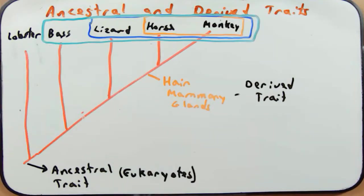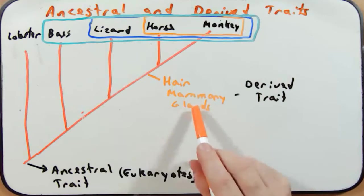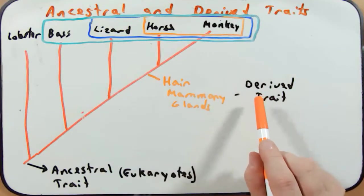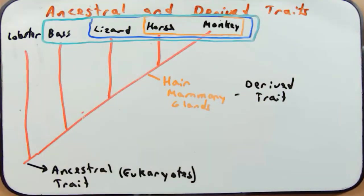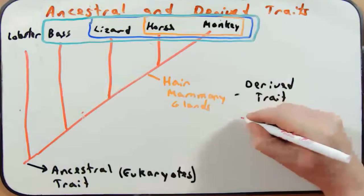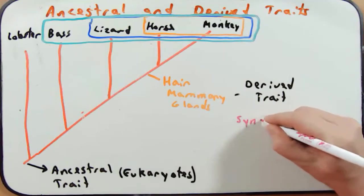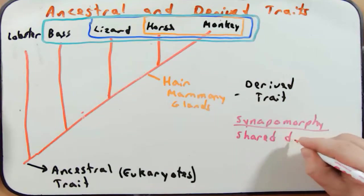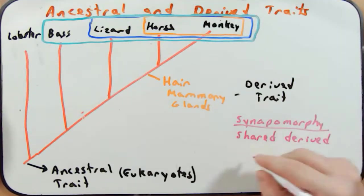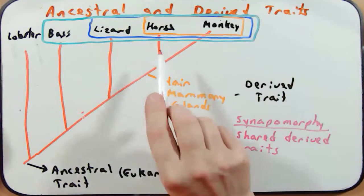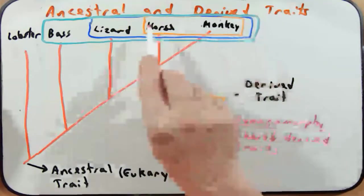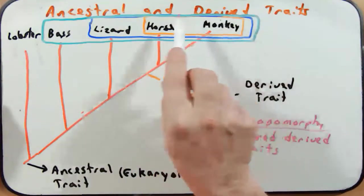What makes horses and monkeys a distinct monophyletic group? They had a common ancestor that had hair and mammary glands. These would be called derived traits — traits not found in previous ancestors like lizards, bass, or lobsters. Another term for shared derived traits is synapomorphies. Hair and mammary glands are homologous traits found in horses and monkeys, and we use these synapomorphies to define this monophyletic group.